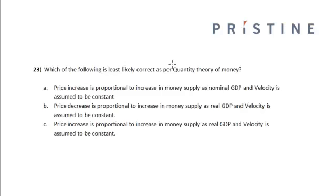Which of the following is least likely true as per the quantity theory of money? Now, as per the quantity theory of money, we have price times the real GDP is equal to the money supply times the velocity of money.